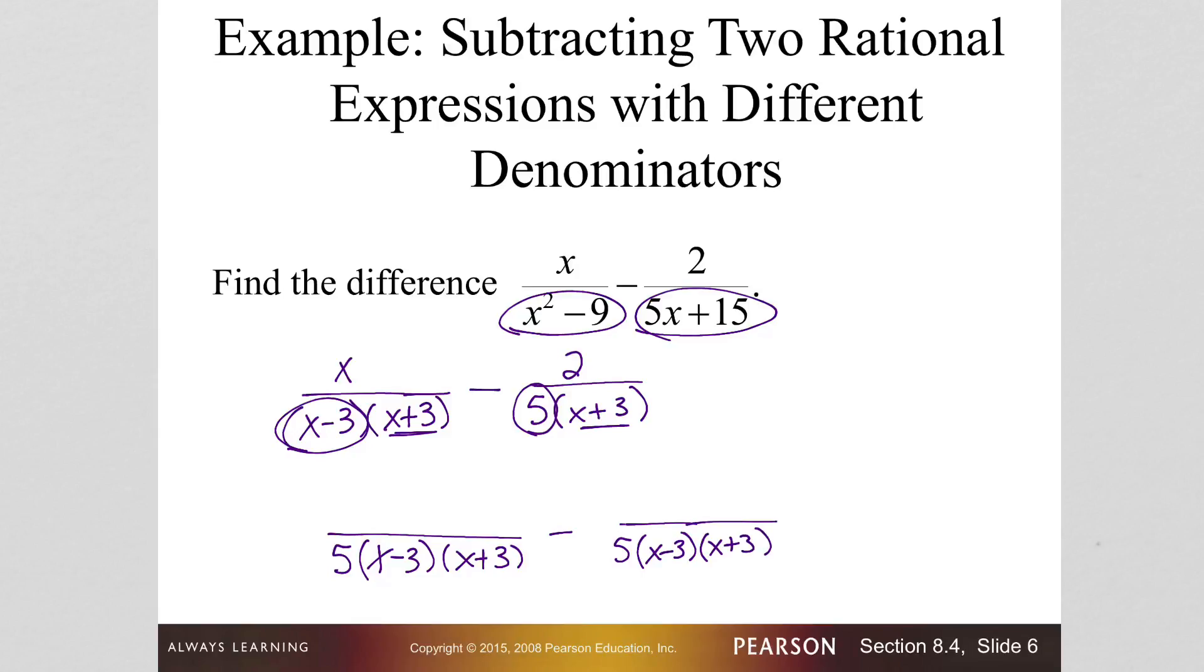So now we are going to take a look at each of these and see what they are missing. So on the left, we are missing 5 over 5. On the right, we are missing x minus 3 over x minus 3.